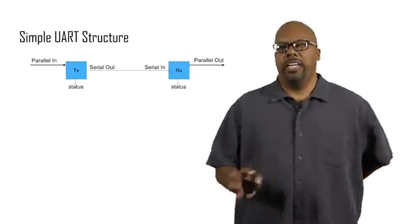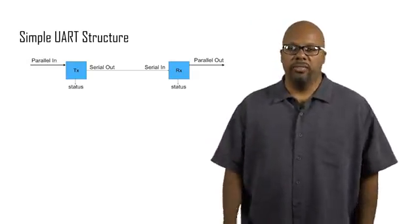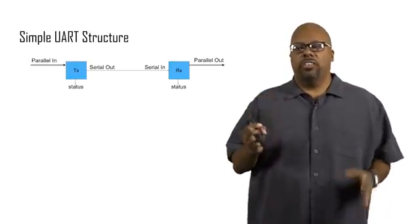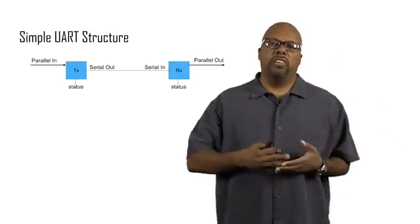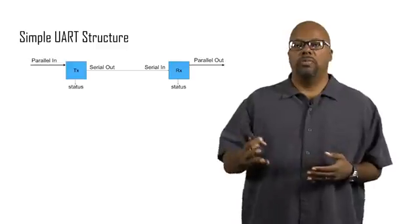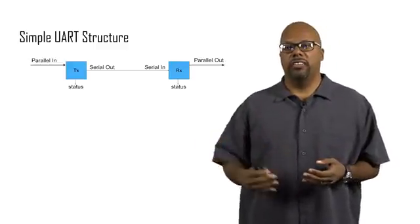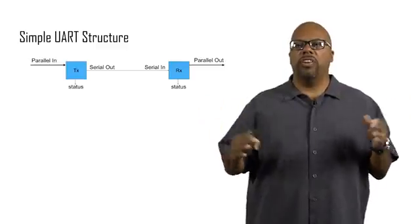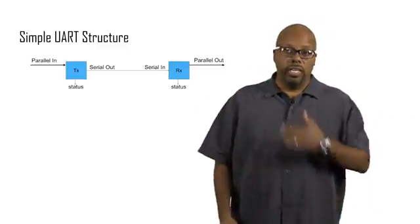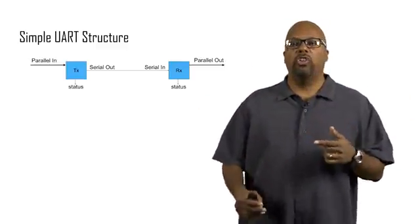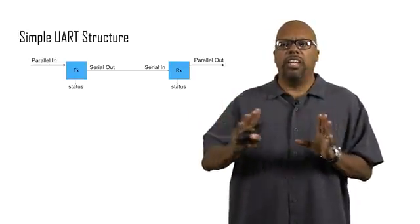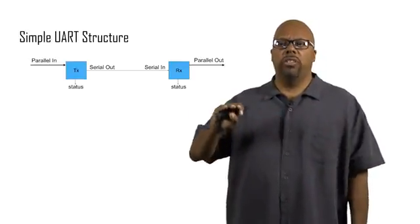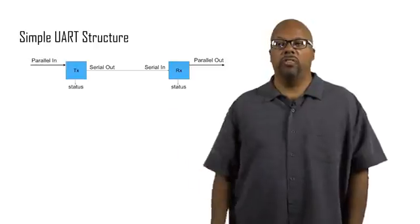All right, so here's a picture of what UART communication looks like. So you've got two sides of the communication, the sender, the transmitter, and the receiver. The transmitter is TX, the receiver's RX. And you can see in between the transmitter and the receiver, there's a serial, a single wire. Generally there might be two, there might be a ground, but let's say a single wire, serial out of the transmitter, serial into the receiver.